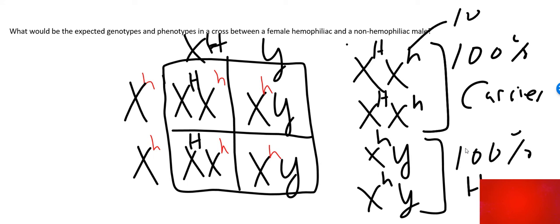Because these are matching, it's going to be 100% X^H X^h and then 100% X^h Y for the boys. So that's what they're asking for when they want those ending genotypes and phenotypes. Be sure to write all that out.